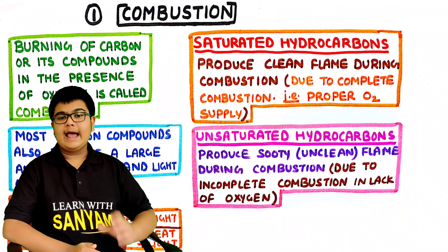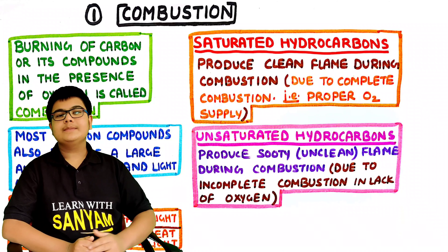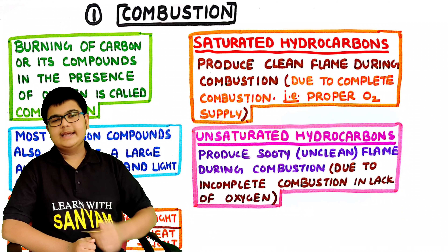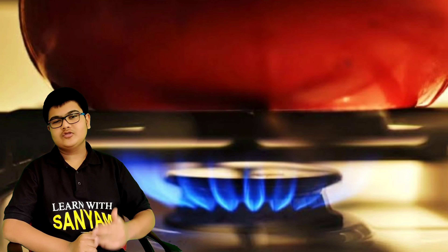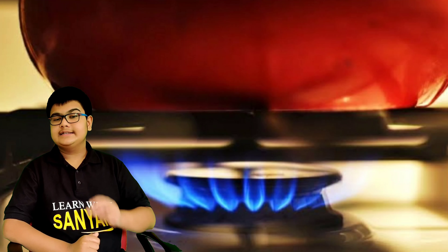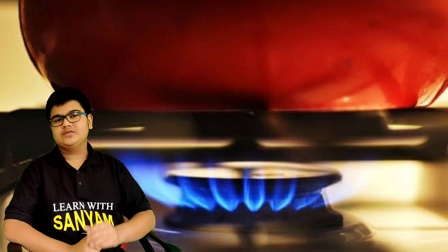The sooty flame from unsaturated hydrocarbons is due to lack of oxygen, causing incomplete combustion. An important observation is that whenever we warm a cooking vessel on a gas stove or a kerosene stove, its lower surface gets blackened. The reason for this blackening is the same — incomplete combustion due to insufficient oxygen reaching the fire.